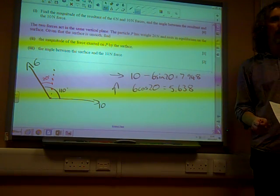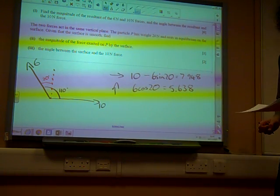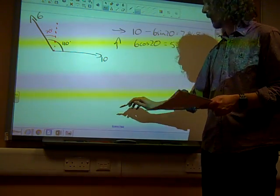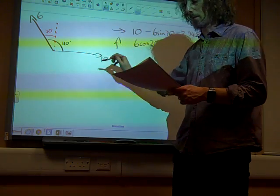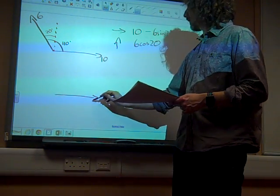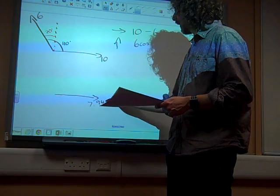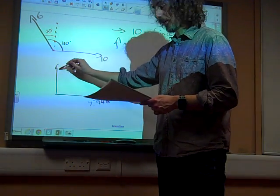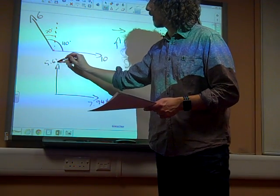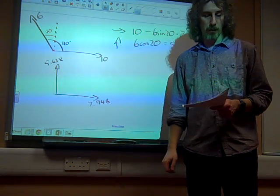So, I've started by putting it into my two perpendicular directions. Now, I want to find the resultant of this. So, I'm going to do another little diagram just to help me out here. I've decided this is 7.948.